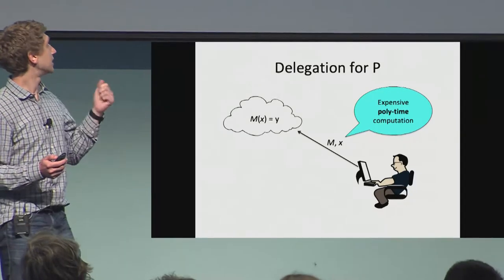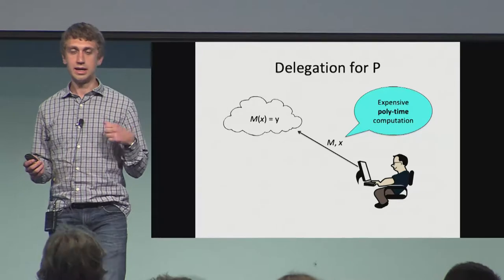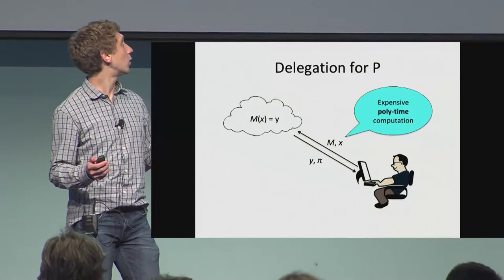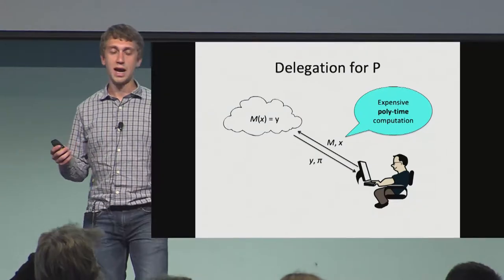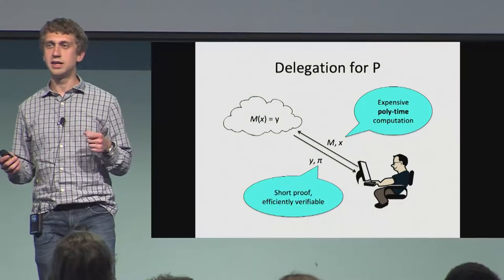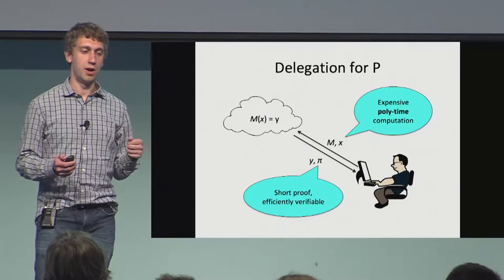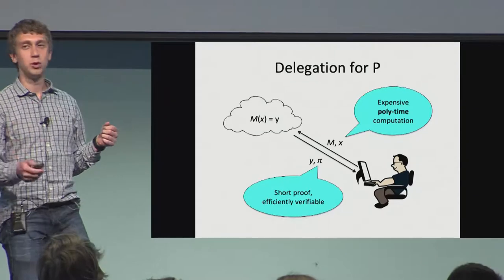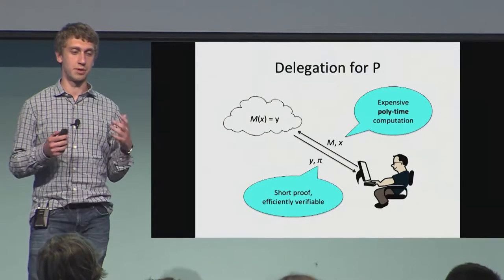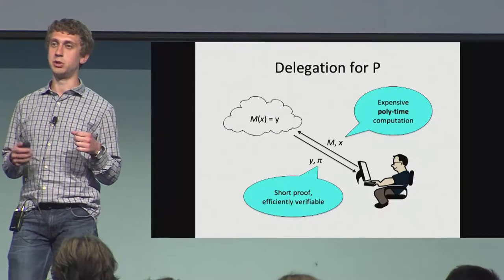So what he does is ask the cloud to compute this machine M on some input X. The cloud computes some output Y, which it returns back to the programmer, as well as a proof pi certifying the correctness of the computation. The idea is that the proof should be short and efficiently verifiable — otherwise the programmer could have just computed the function himself. So we want this proof to be efficient and take much less time than computing the function itself.